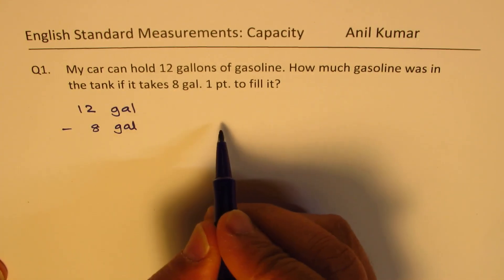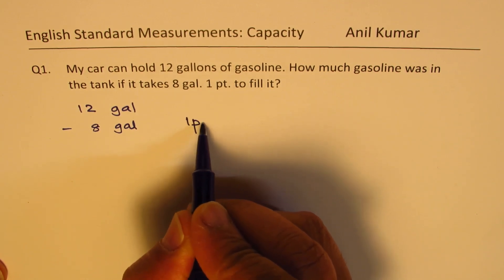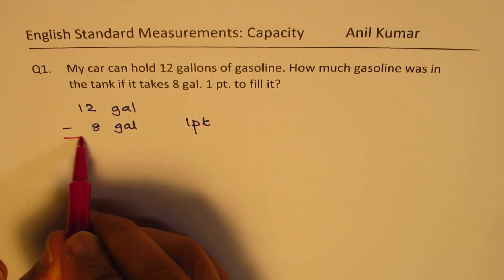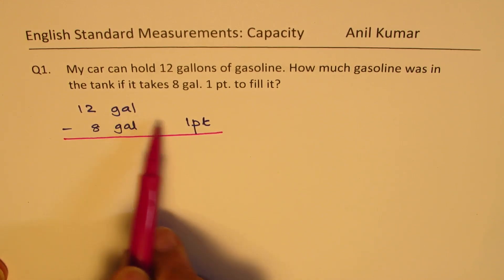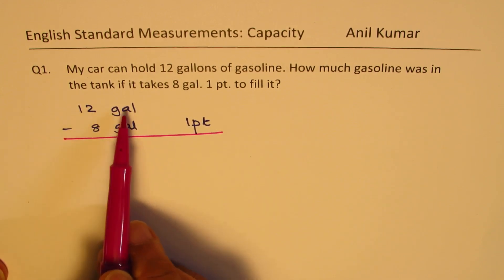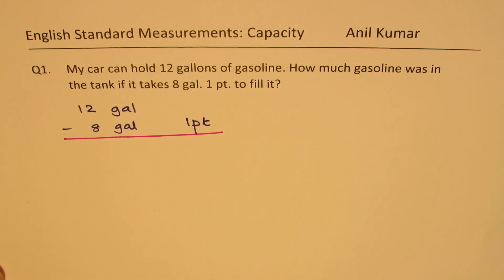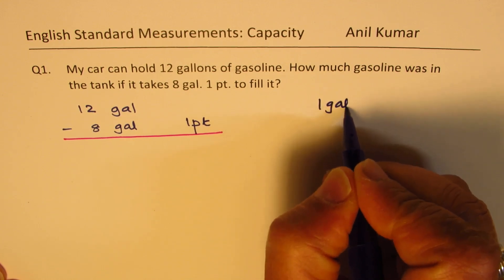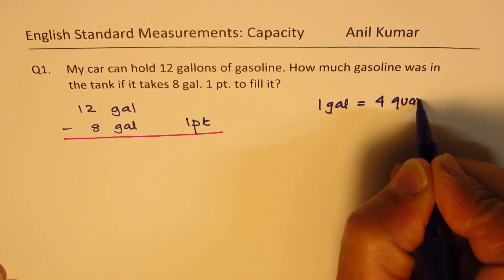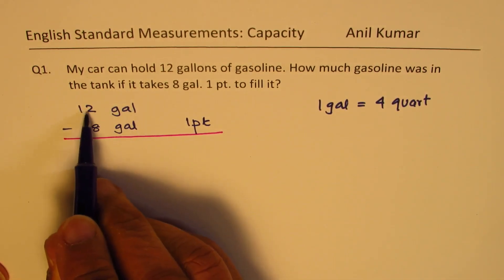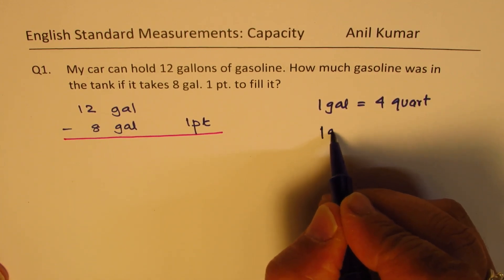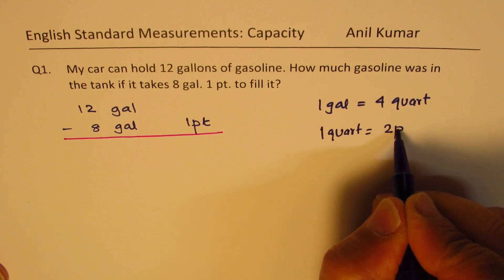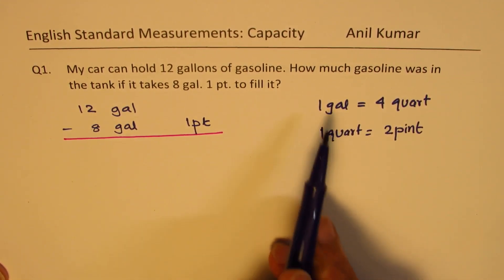In between gallons and pint we have quart also, so let me write one pint here. When I take this away, I'll know how much gas was in the car. Now we don't have anything for pint, so I'll have to borrow from gallons. We know that one gallon is equal to four quarts, so if I borrow one gallon I will get four quarts. But I need pints — well, one quart is equal to two pints. So we are going to use this conversion factor.